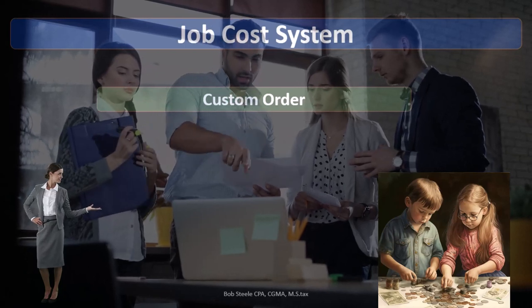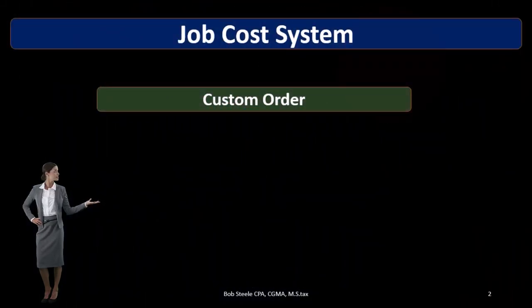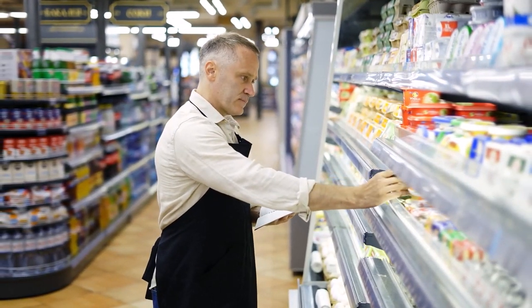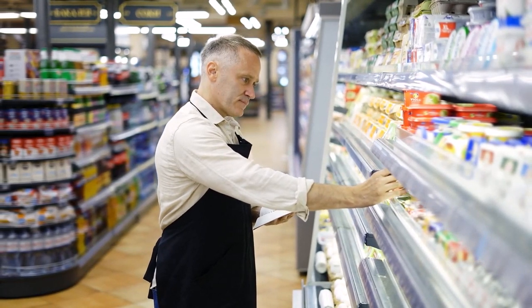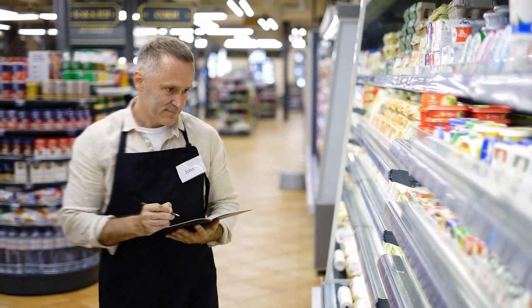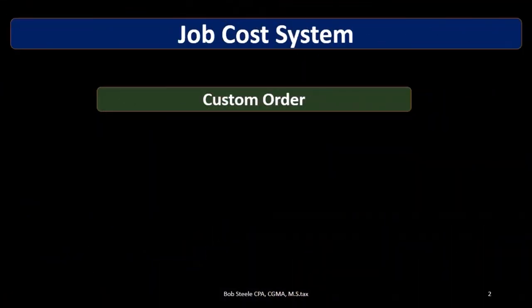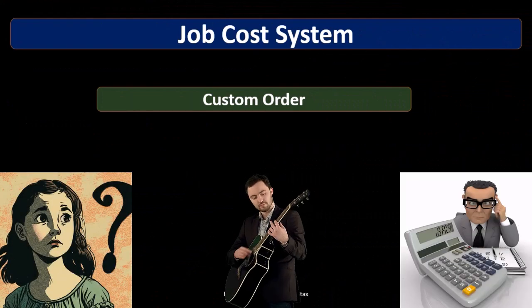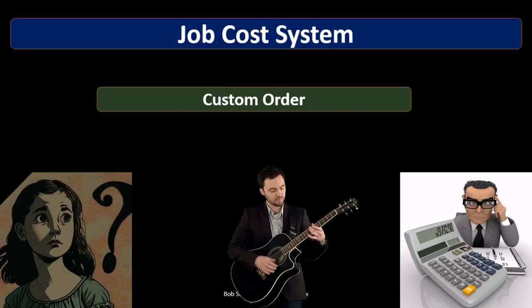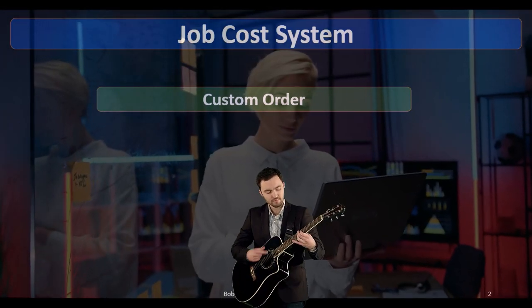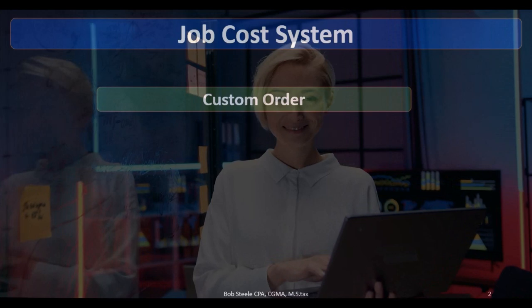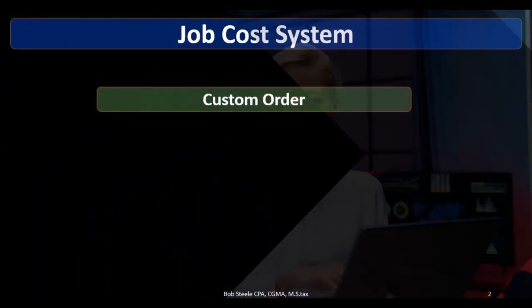A job cost system means that we are going to apply the cost of the inventory to particular jobs, as opposed to a process cost system where we assign costs to a process as we go. Think of the example of custom guitars — anything custom would typically be in a job cost system. If we get an order for a guitar, it's a specific type, and we custom make it in accordance with the order.